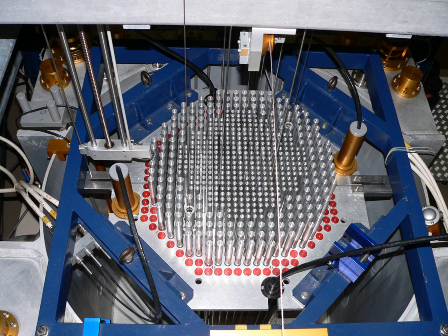Control rods are made of neutron poisons and therefore tend to absorb neutrons. When a control rod is inserted deeper into the reactor, it absorbs more neutrons than the material it displaces, often the moderator. This action results in fewer neutrons available to cause fission and reduces the reactor's power output.